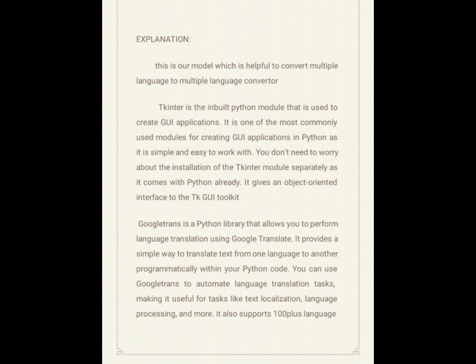Creating custom widgets: Tkinter includes a variety of built-in widgets such as buttons, labels, and text boxes, but it also allows you to create your own custom widgets. Prototyping a GUI: Tkinter can be used to quickly prototype a GUI, allowing you to test and iterate on different design ideas before committing to a final implementation. Google Trans is a Python library that allows you to perform language translation using Google Translate.